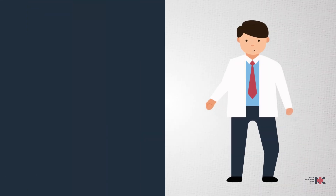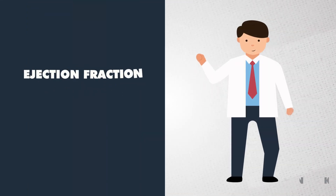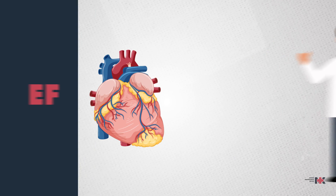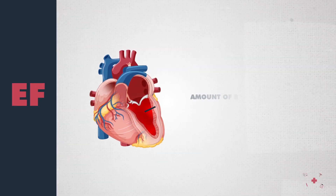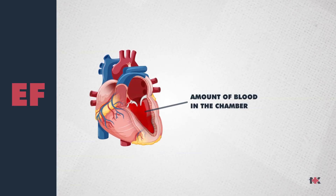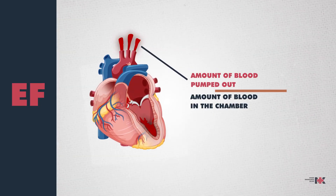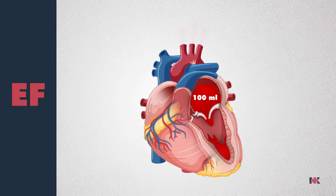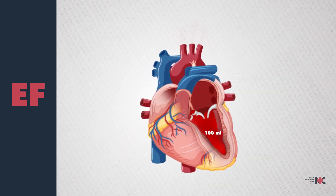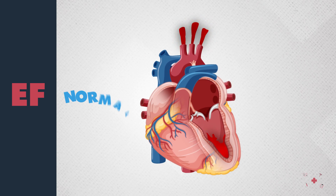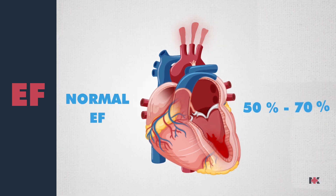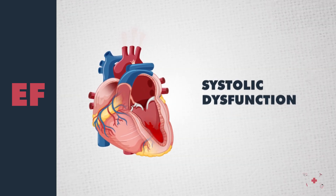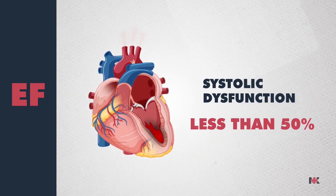To understand our topic better, let's discuss ejection fraction, or the EF, of heart failure. EF is a comparison of the amount of blood in the chamber to the amount of blood pumped out. Normally, our heart is filled with 100ml of blood and pumps out 50–70%. In systolic dysfunction, less than 50% of the blood is pumped out.